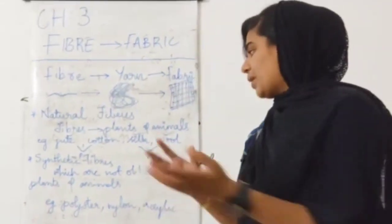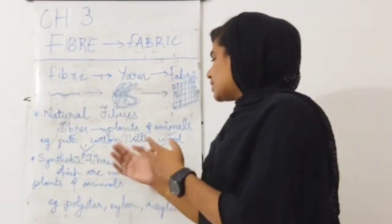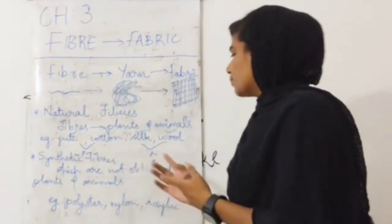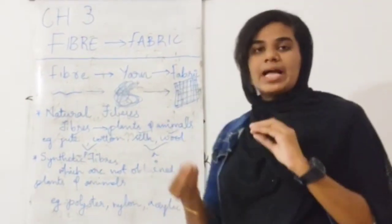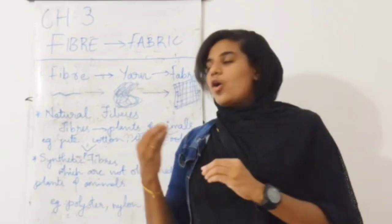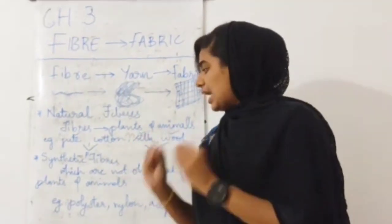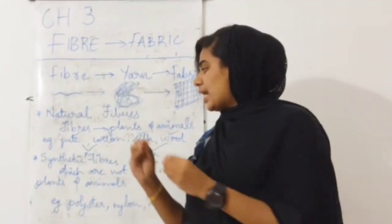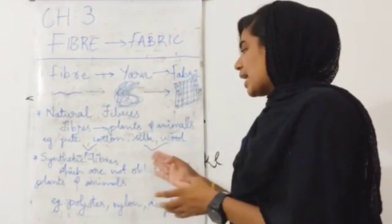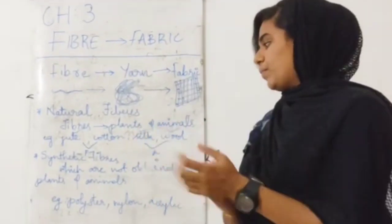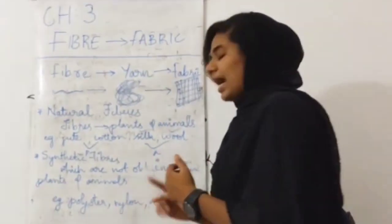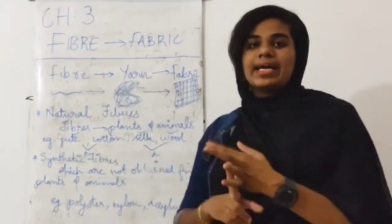Then we have synthetic fibers. Synthetic fibers are fibers which are not obtained from plants and animals. Examples of synthetic fibers are polyester, nylon, and acrylic.